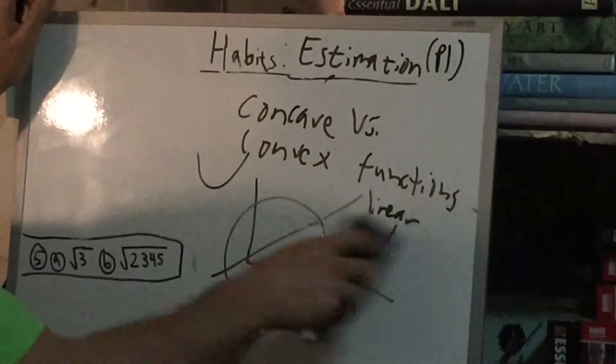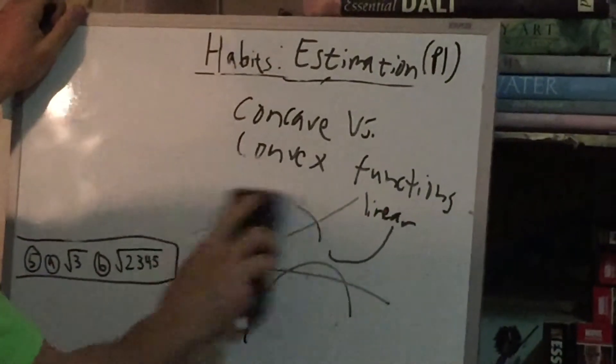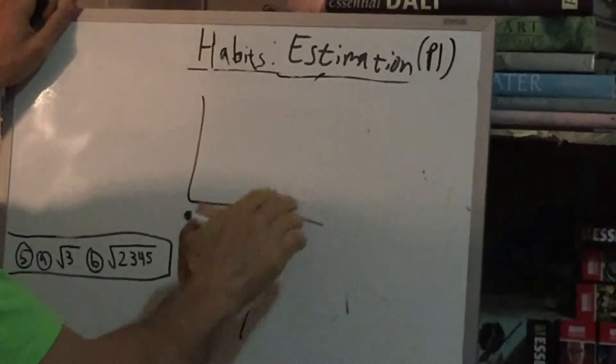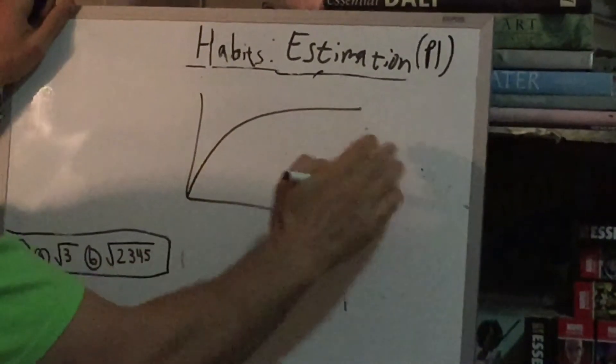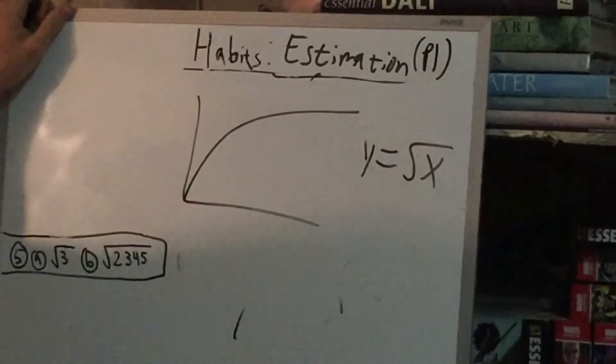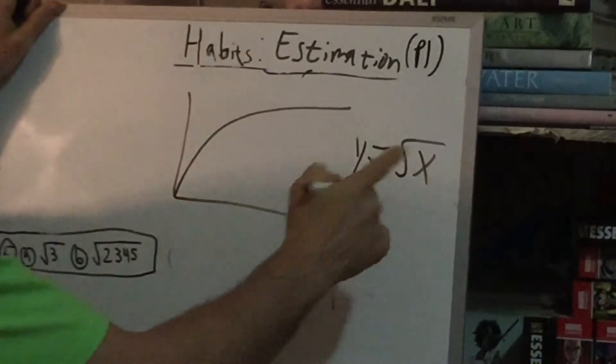What does this have to do with anything? So if we look at the square root function, now what is the square root function? That's what we've been doing.